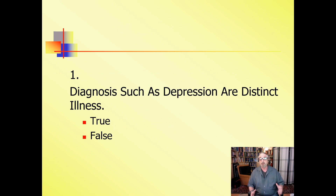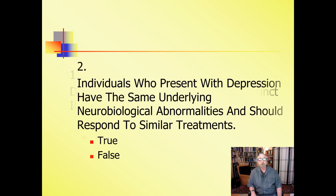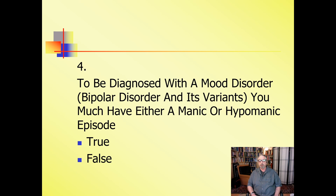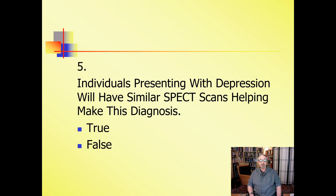Let's start with a quick check of your knowledge. Some of you may know all the answers, but let's do a couple of true or false questions. First: diagnoses such as depression are distinct illnesses — true or false? Individuals who present with depression have the same underlying neurobiological abnormalities and should respond to similar treatments. Individuals who present with depression — antidepressants are an appropriate first-line treatment. To be diagnosed with a mood disorder — bipolar disorder and its variants — you must have either a manic or hypomanic episode, true or false? And finally: individuals presenting with depression have similar SPECT scans helping make the diagnosis — true or false?